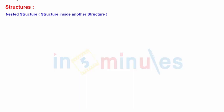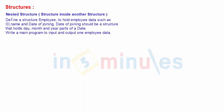Let's see how to define a structure inside another structure. To understand that, we'll take a complete example and solve it practically. The question is: define a structure 'employee' to hold employee data such as ID (an integer), name (a char array, i.e., a string), and date of joining. The date of joining is itself a date consisting of three parts — day, month, and year — as stated in the problem.